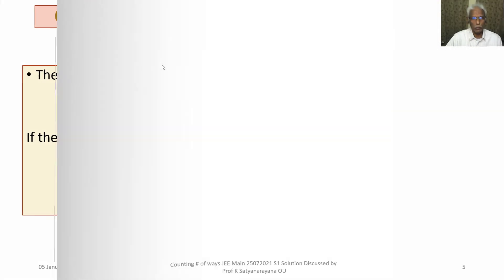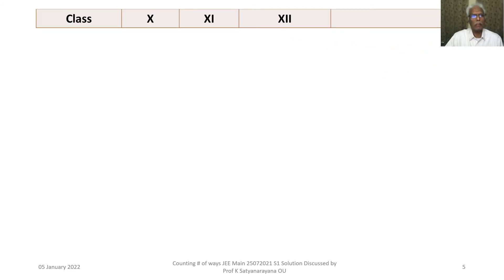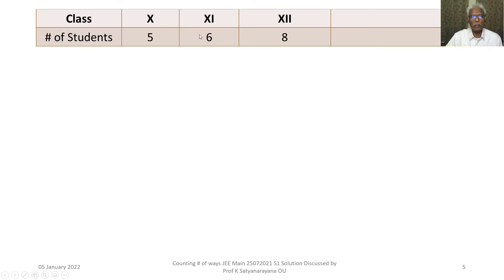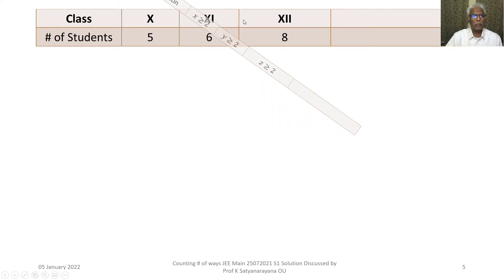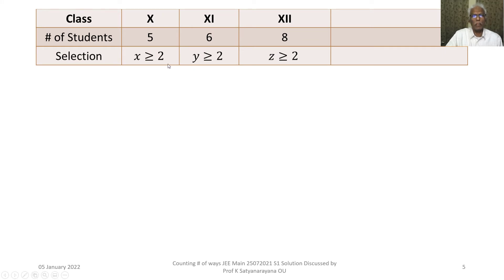We have a table: class 10 has 5 students, class 11 has 6 students, and class 12 has 8 students. A selection of 10 students is to be made. Let x be the number of students from class 10, y from class 11, and z from class 12. At least 2 from each means x ≥ 2, y ≥ 2, z ≥ 2, and x + y + z = 10.